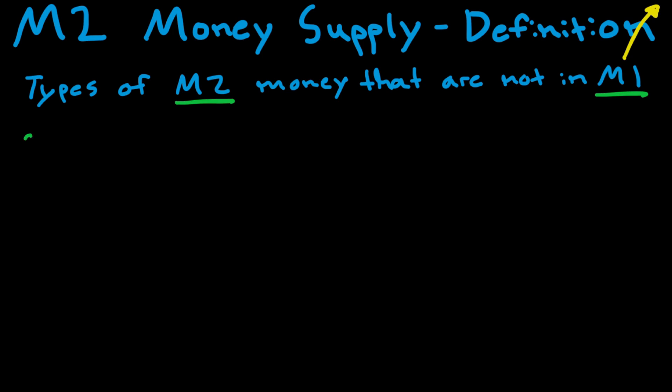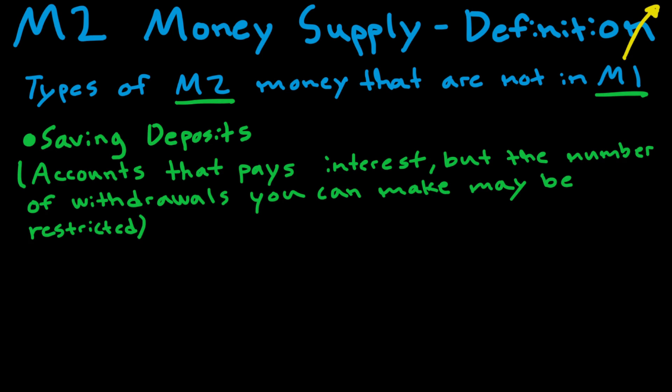First of all, we have something called savings deposits. These are accounts that pay interest, so you get money from saving in the accounts. But the number of withdrawals you can make may be restricted. For some savings deposits, you can't take out money every day. You will have a certain amount of times you can actually withdraw your money.